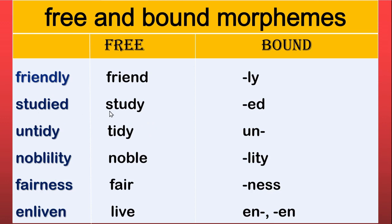Look at this table. 'Studied' has 'study' plus -ed; -ed is the past tense morpheme and it is bound. 'Untidy': un- showing negative significance is a prefix added to 'tidy'; 'tidy' is free, un- is bound. 'Noble' in 'nobility': 'noble' is free, and -ity the suffix is bound. 'Fairness': 'fair' is free, and -ness is the bound morpheme. 'Enliven': you have en- as prefix and -en as suffix, both being bound morphemes, and 'live' as the free morpheme.